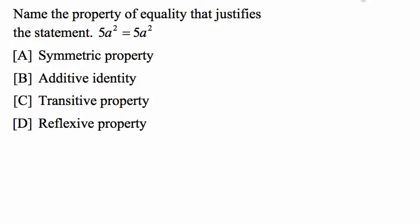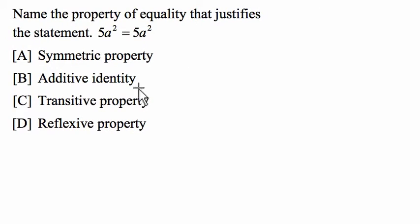Hello and welcome. In this video, we're looking at a bunch of different properties that justify a given equation. So the equation is 5a squared equals 5a squared. And that just is a reflection of what's called the reflexive property, which tells us that anything must equal itself.